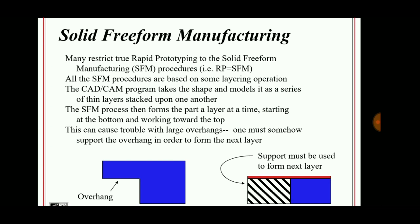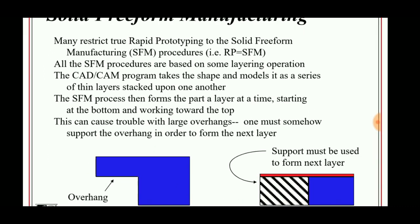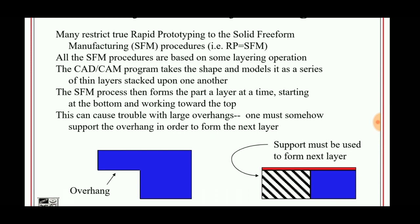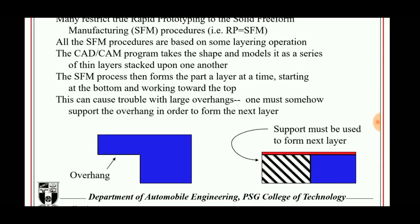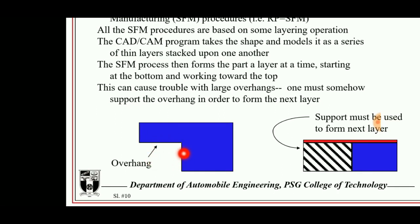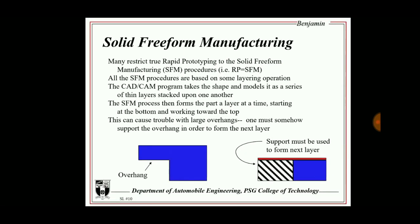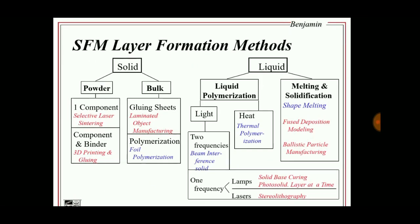Solid freeform manufacturing forms a part one layer at a time, starting at the bottom and working toward the top. A challenge is the bonding of one layer to another. For overhanging shapes such as an inverted L, a gap forms, so a support material must be placed to prevent the layer from falling and to allow the next layer to be built and bonded to the original part.